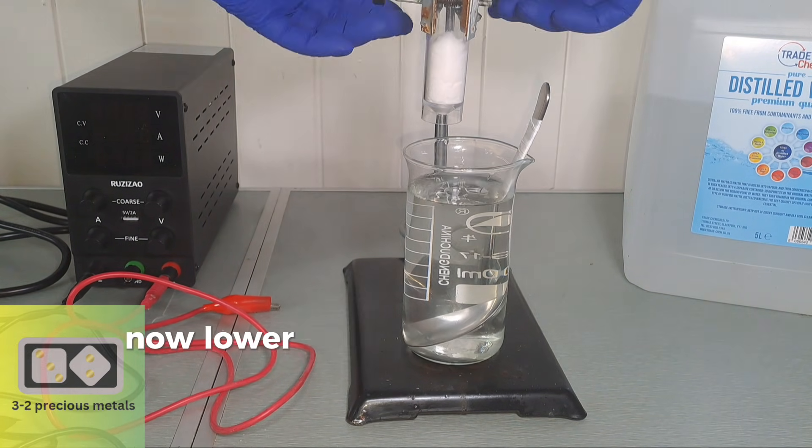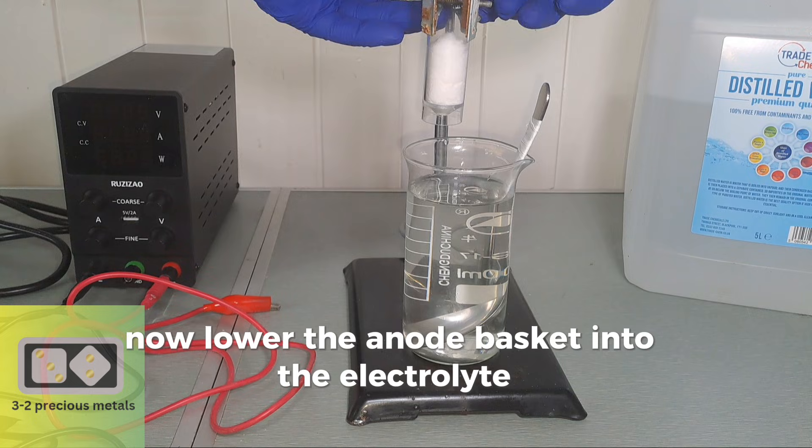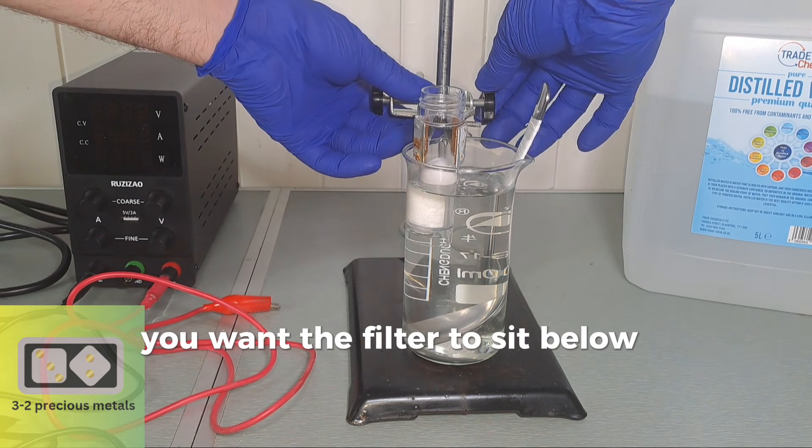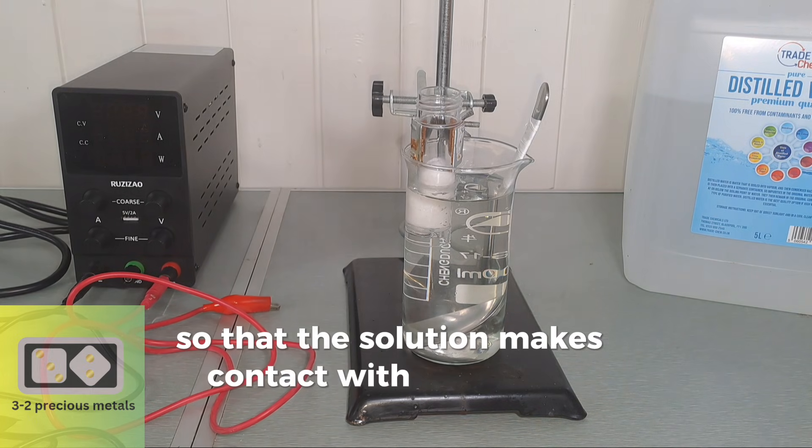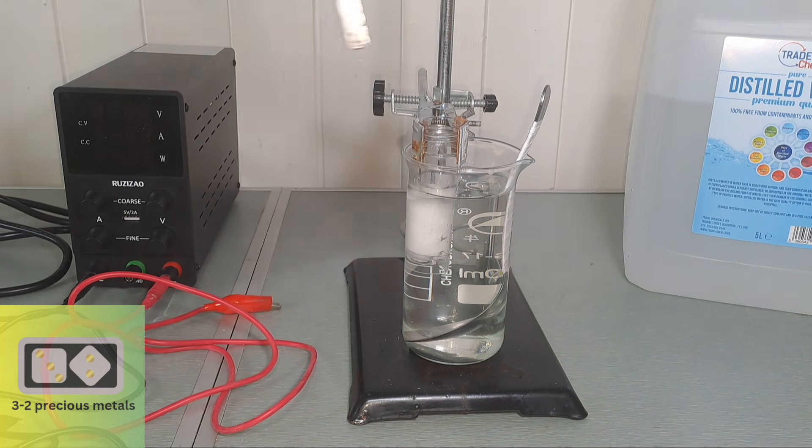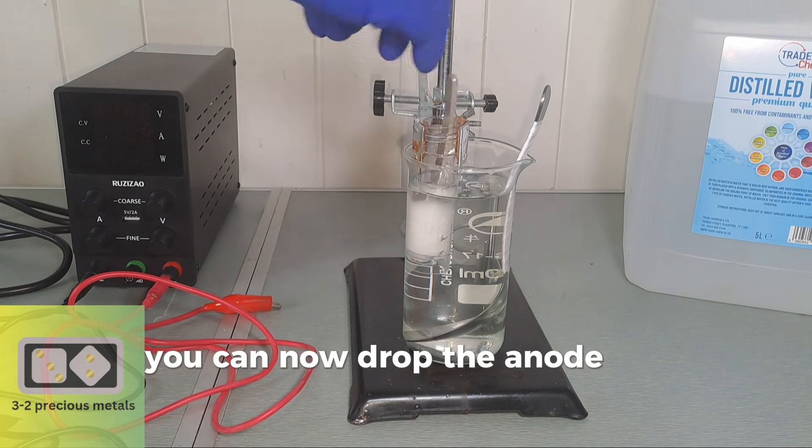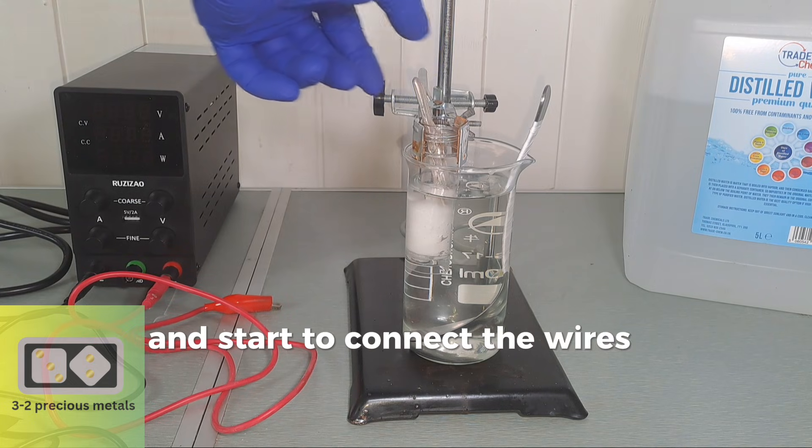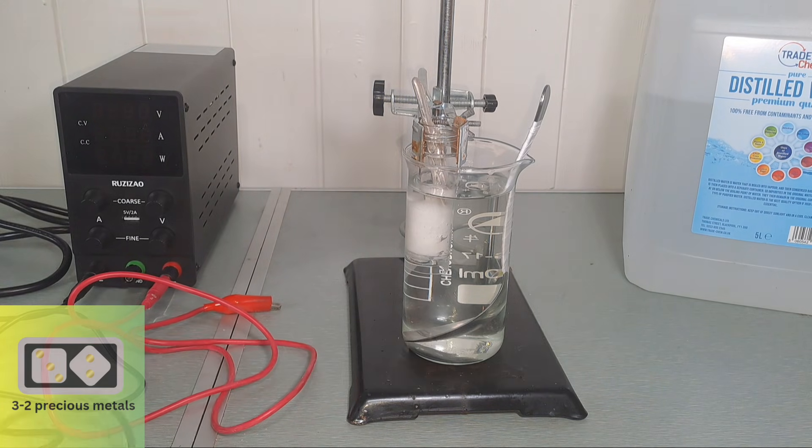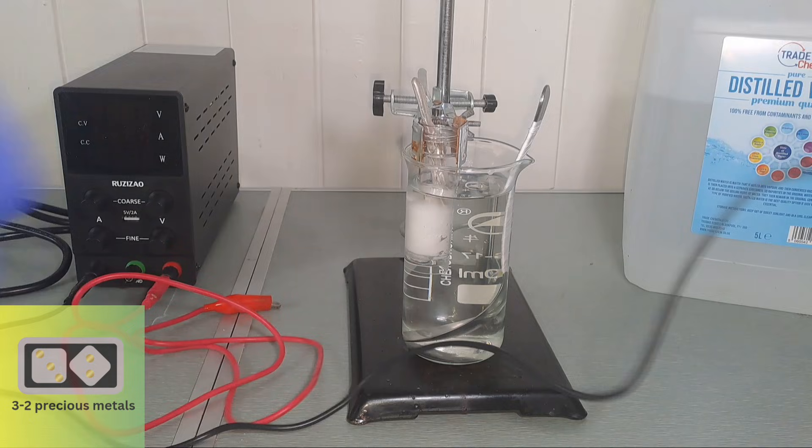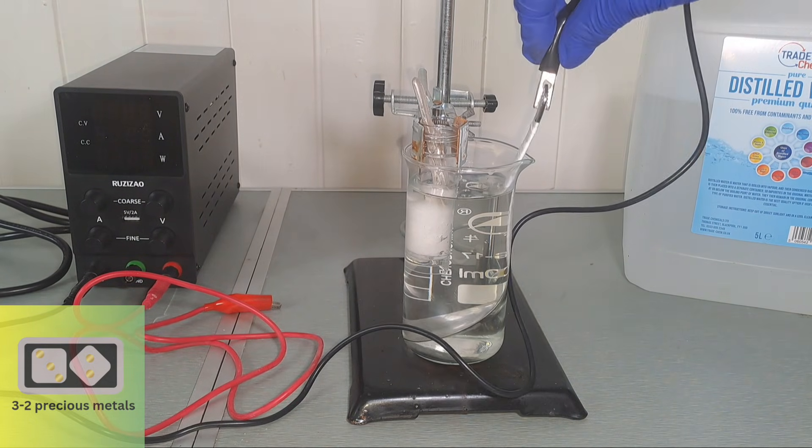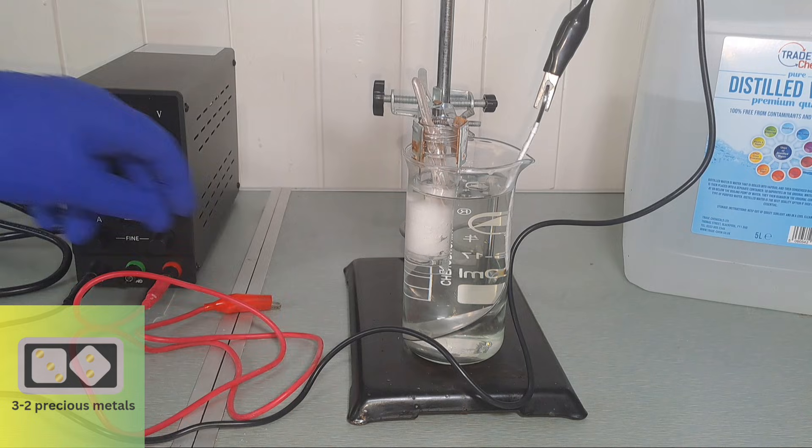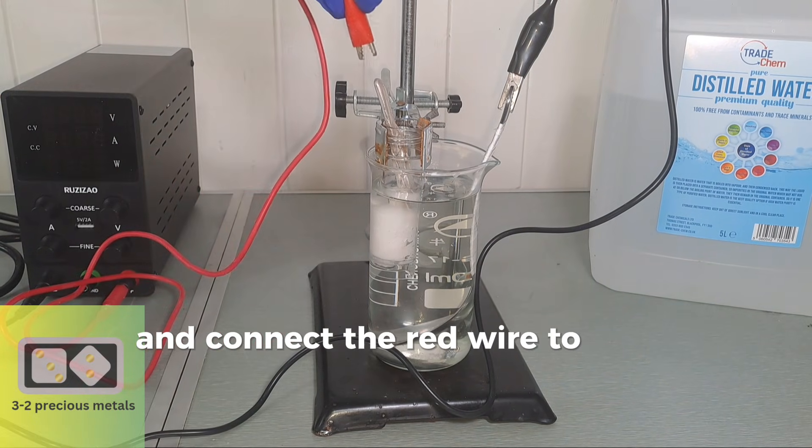Now, lower the anode basket into the electrolyte. You want the filter to sit below the level of the electrolyte so that the solution makes contact with the anode. You can now drop the anode in and start to connect the wires from the power supply. Connect the black wire to the cathode. And connect the red wire to the anode.